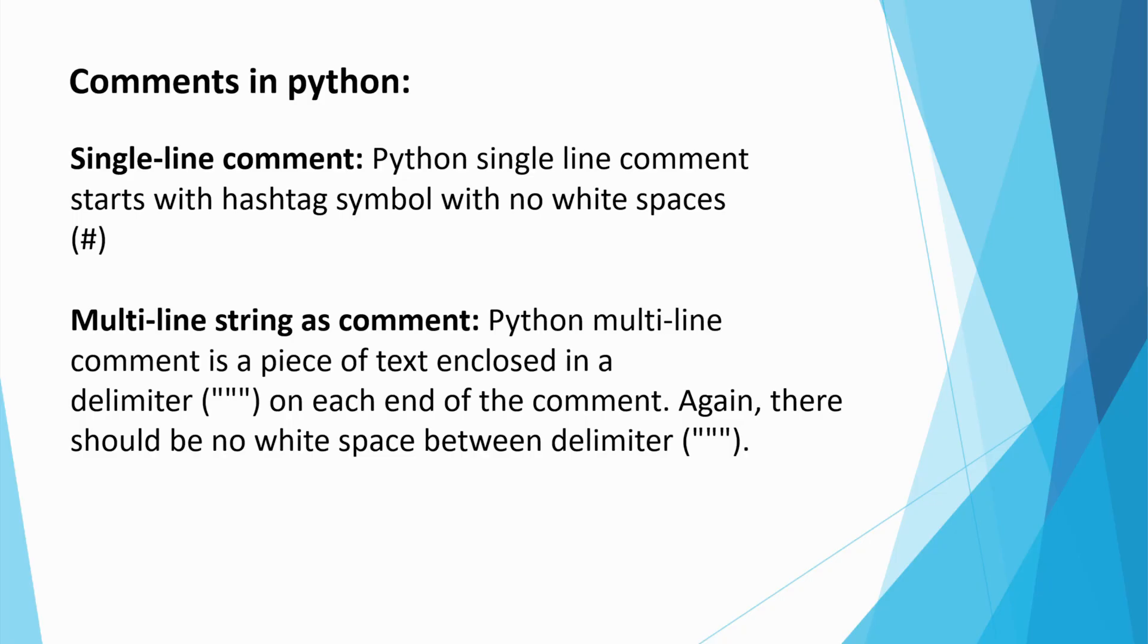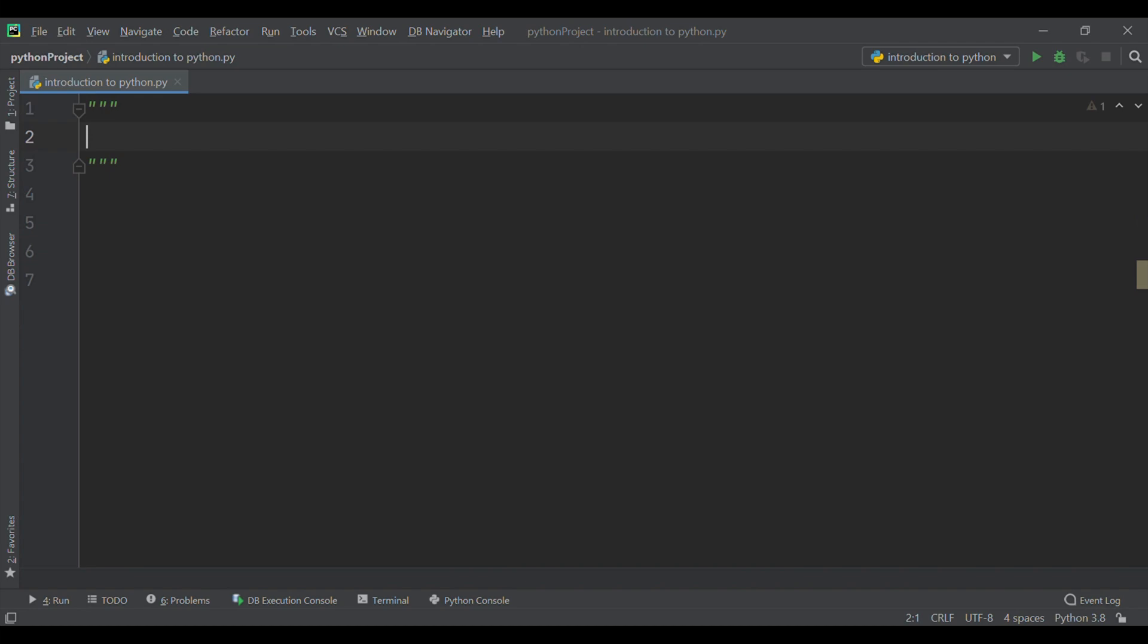Python multiline comment is a piece of text enclosed in a delimiter on each end of the comment. Again there should be no white space between the delimiter. This is an example of a multiline comment. Including appropriate comments that are relevant and useful increase the readability of the code and make it easier to understand.